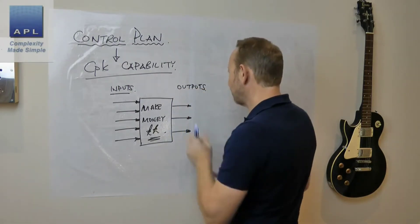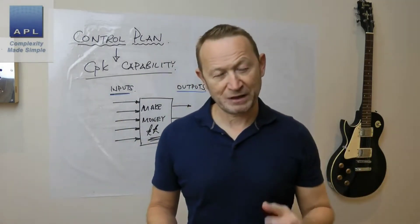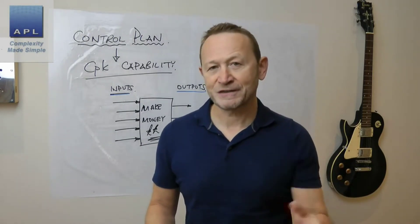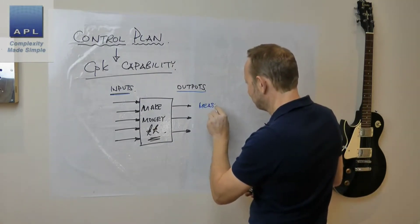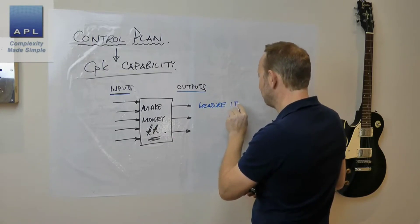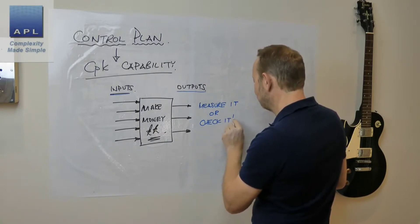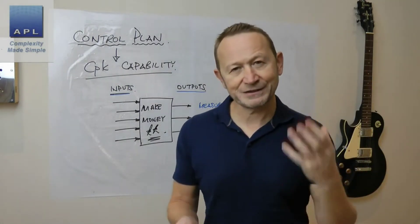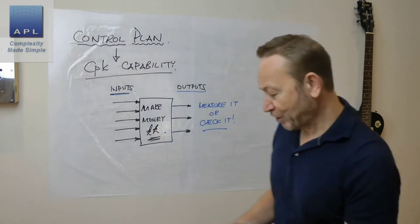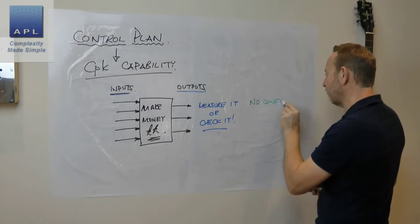Now I have to say, lots of control plans get obsessed with the output, and what they decide to do is to measure it or check it. That is not a control plan, that is an inspection plan. And it also shows no confidence in your process.